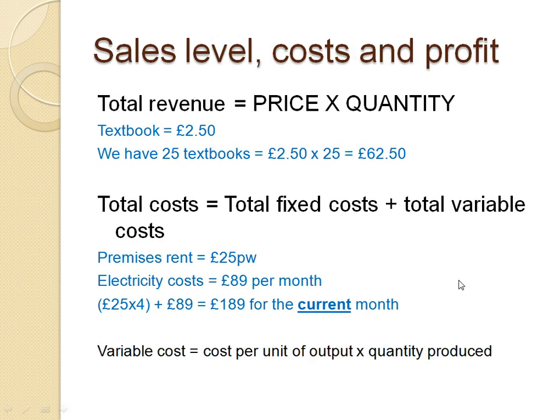Sales revenue, cost and profit involve several calculations. Total revenue equals price times quantity. For example, a textbook priced at £2.50, with 25 textbooks sold: £2.50 × 25 = £62.50 total revenue. The textbook is the price and 25 is the quantity.